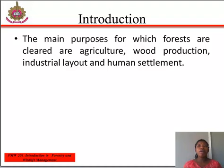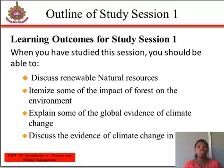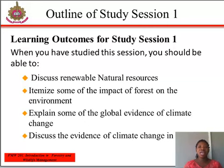Tropical rainforests and savannah, which seemed limitless in the past, are becoming increasingly fragmented. Conversion movements have begun to force a broader view — a return to a wider perspective of both the tropical rainforests and the savannah. At the end of this study section, you should be able to discuss renewable natural resources, itemize some of the impacts of forests on the environment, explain some of the global evidence of climate change, and discuss the evidence of climate change in Nigeria.